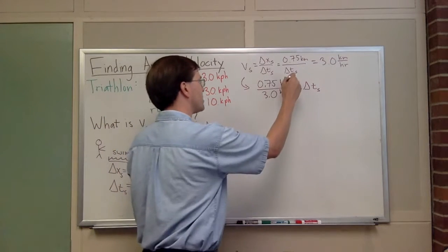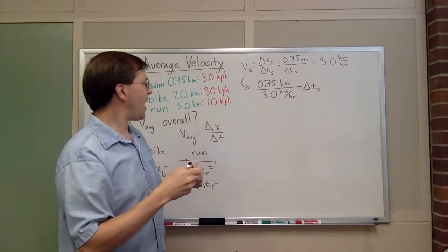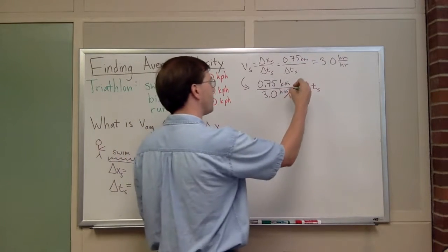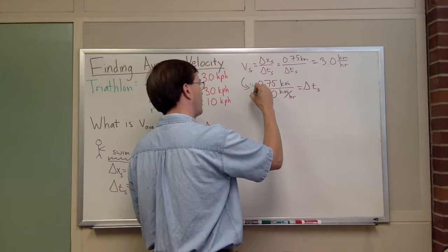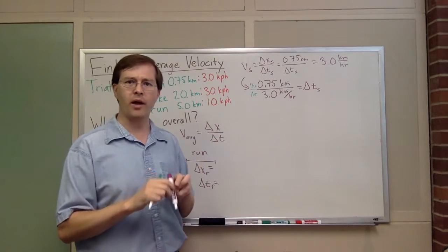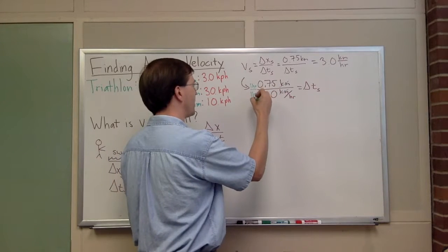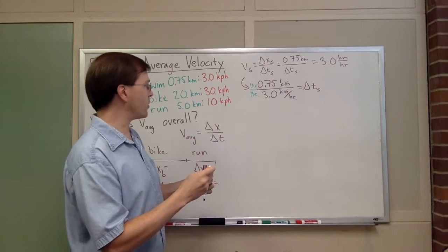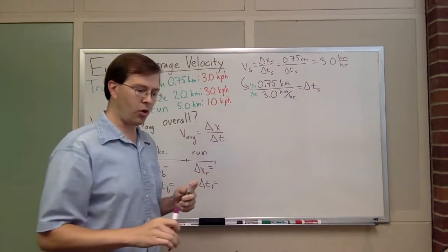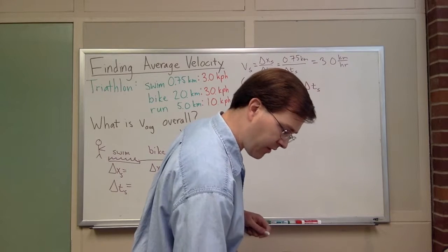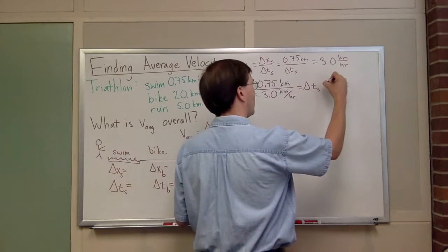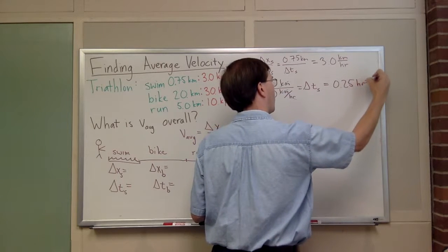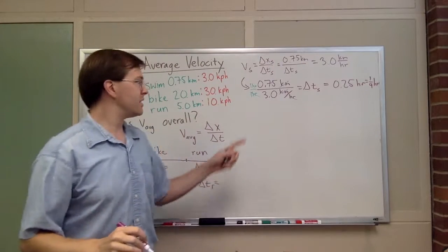I can notice right away that kilometers in the numerator and denominator cancel out. I always pay attention to units in every step, crucial for error checking. I also notice that if I multiply by 1 hour divided by 1 hour, the hours in the denominator will cancel out and I'm left with just hours on the left. When I do this calculation, 0.75 divided by 3.0, I get 0.25 hours, or a quarter hour. That's my delta t for the swim part.